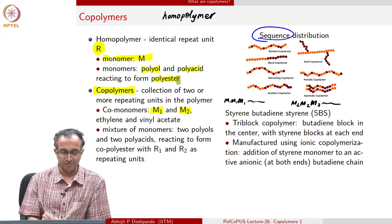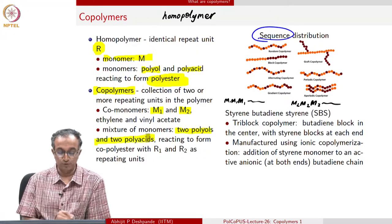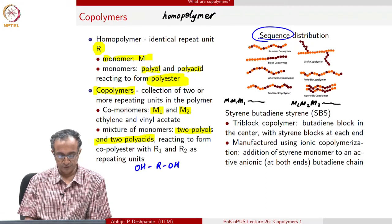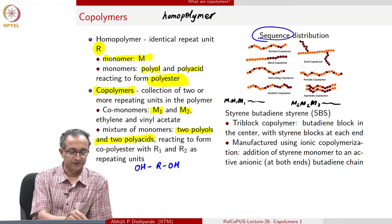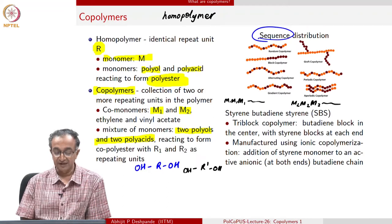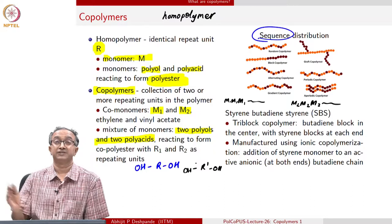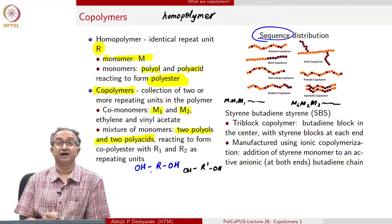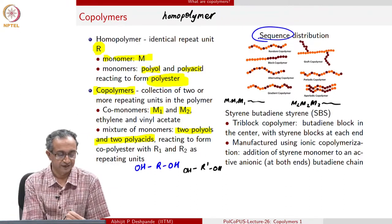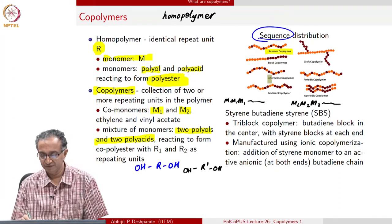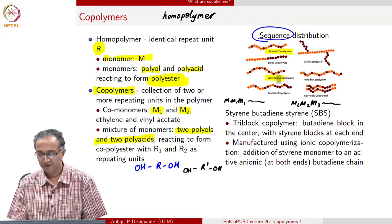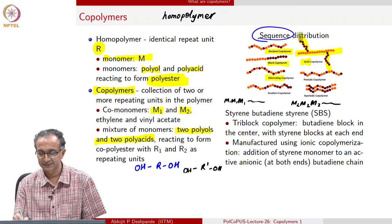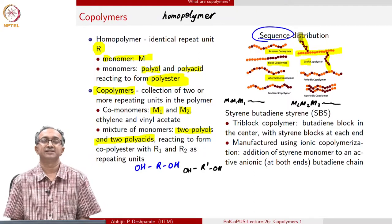Similarly, continuing with the polyester example, we can have two polyols and two polyacids. If we individually use them, we get a homopolymer with R-prime in one case and R in the other. But when we combine them together, we get a copolymer. The sequence of R1, R2 or M1, M2 is what differs — we can have them randomly distributed, alternating (M1-M2-M1-M2), in blocks, or we can make one the backbone chain and the other a graft. There are other varieties as well, and depending on our synthetic capability, we can make any of these different copolymers.